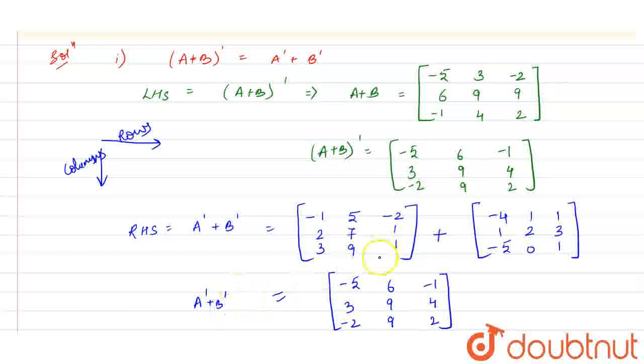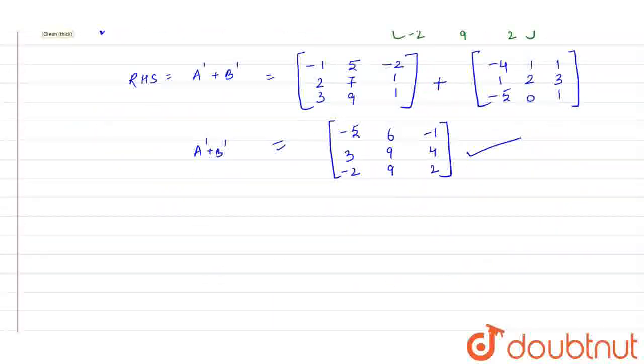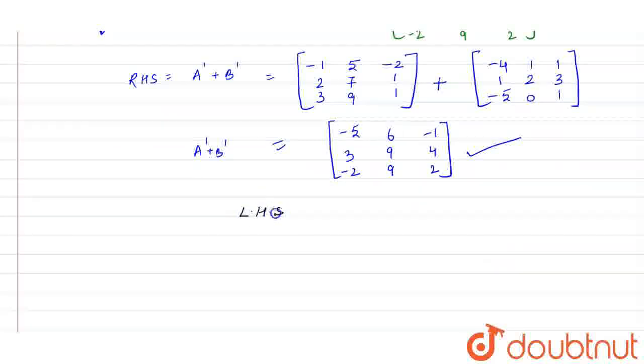Now let us check or compare the LHS and RHS. So we have LHS as minus 5, 6, minus 1, 3, 9, 4, minus 2, 9, 2. So this equals to this. That means we can say that LHS equals RHS. Hence, verified.